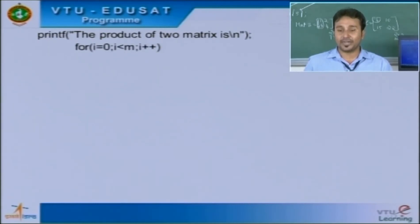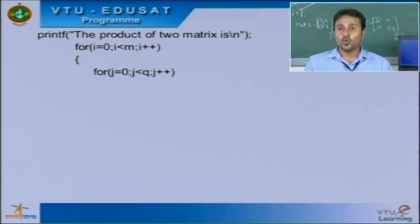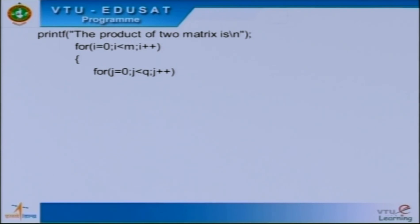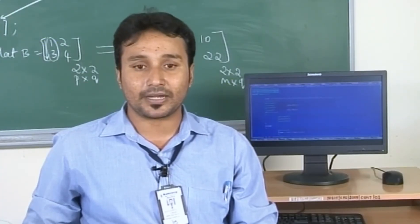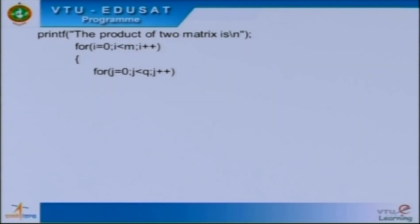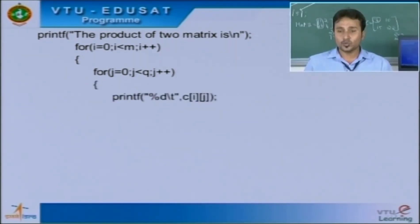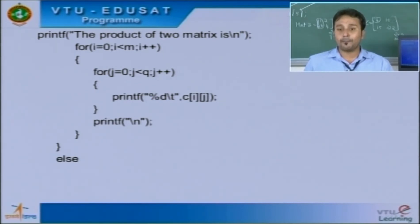Finally, we need to print the product of the computed multiplication matrix. As we know, the resultant matrix is in the form of M cross Q. Since values were inserted element by element, we display the output also element by element using two nested for loops — the first for row value and the second for column value. Each element is printed using the format specifier '%d' and C[i][j]. After the inner loop, we have a printf('\n') to display the elements in proper matrix form.